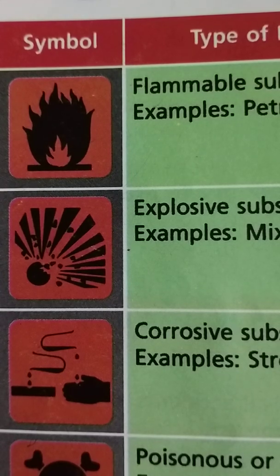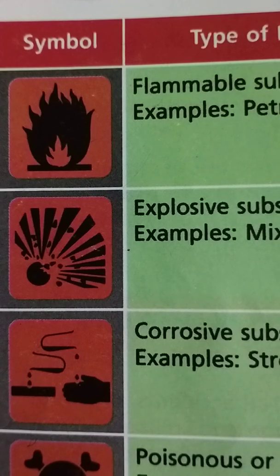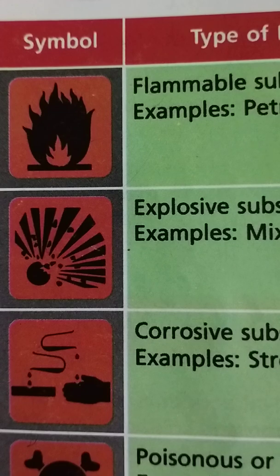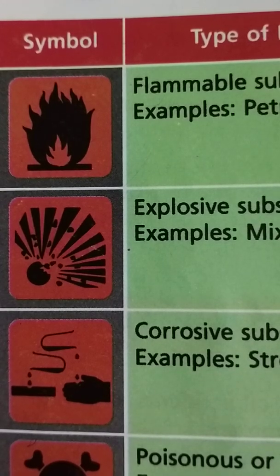The third symbol is used for corrosive substances. Corrosive substances are those that will damage or destroy other substances they come into contact with, by means of a chemical reaction. Examples include strong acids and alkalis. Avoid direct contact with corrosive substances as they can cause burns. If acid or alkali spills on your skin or clothes, wash it off with plenty of water immediately.